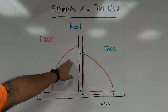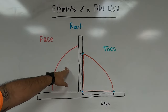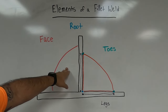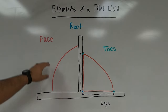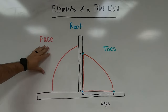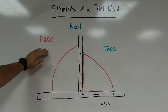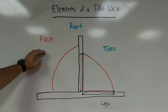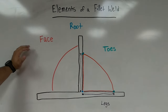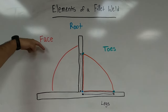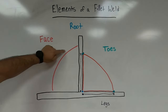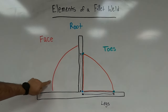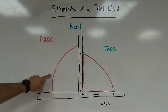I've got a second fillet weld drawn to cover the remaining elements. The next element is the face. The face is what we see when looking directly at the front of the weld — whatever appears on top of the weld surface. If we're depositing the weld and looking in from this angle, this right here is the face, also called the surface of the weld.